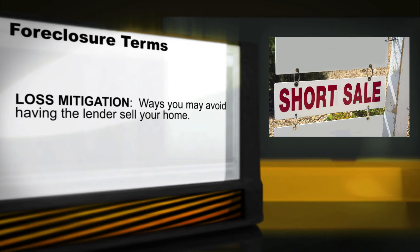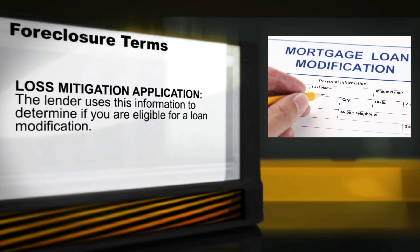Loss mitigation refers to the ways that you may avoid having the lender sell your home. In some cases, you may be able to negotiate changes to the terms of the loan so you can keep your home. Loss mitigation may also include a short sale, cash for keys, or a deed in lieu. A loss mitigation application is a document that the lender must include with its notice of intent to foreclose. The lender will use the information on this form to determine if you are eligible for a loan modification or other loss mitigation.